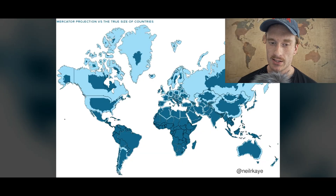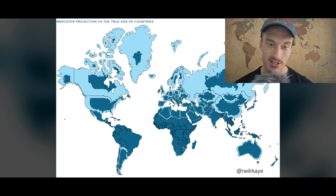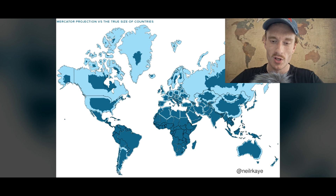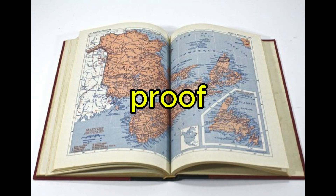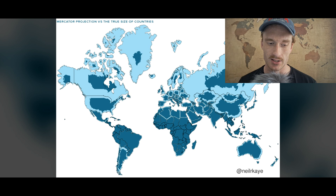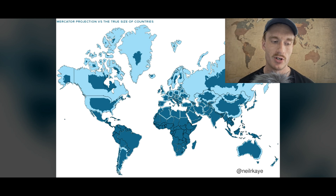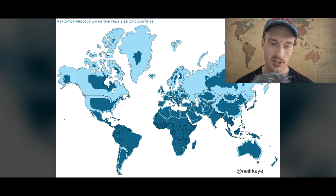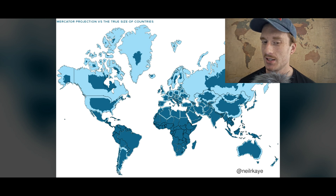Hello everyone, welcome to a new video. The map that you see in front of you is a very interesting map of the world that shows the Mercator projection versus the actual or true size of the countries in the world. The Mercator projection map is the one you find in your school geography books — it is the most commonly used two-dimensional projection of the Earth.